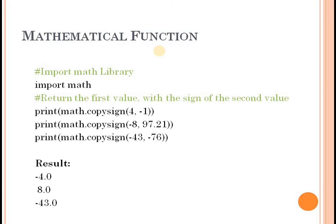For mathematical functions there are two parts: constants and methods. We discussed the constants and the methods, including numbers and numeric functions, powers and logarithm functions, and examples. For example, math.copysign(4, 1) — the result is minus 4.0, showing the sign is applied from the second argument.